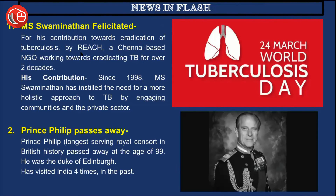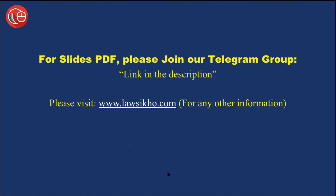In today's news in flash: MS Swaminathan has been felicitated. Known as the man behind India's green revolution, he has also made efforts to eradicate tuberculosis. For his contribution since 1988 — including instilling a holistic approach to TB by engaging communities and the private sector — he was recognized by REACH, a Chennai-based NGO working towards eradication of tuberculosis for over two decades. Also, Prince Philip, the longest-serving royal consort in British history and Duke of Edinburgh, has passed away at the age of 99. He had visited India four times in the past. That's all for today — thank you for staying tuned with Lawseekho, and please subscribe for more updates.